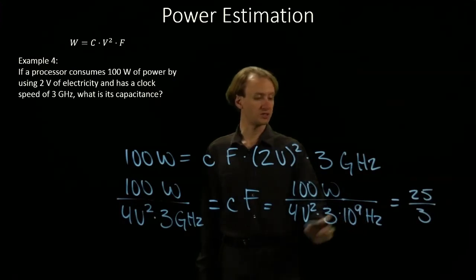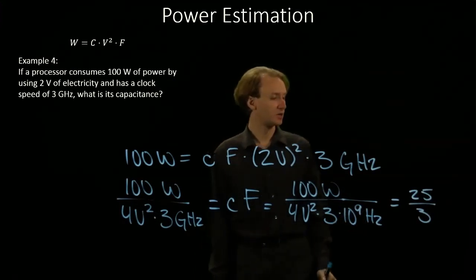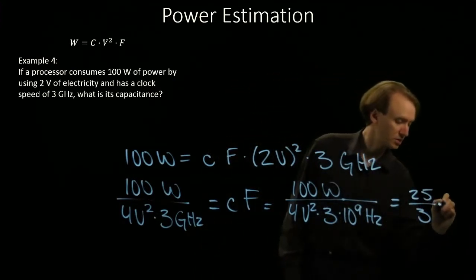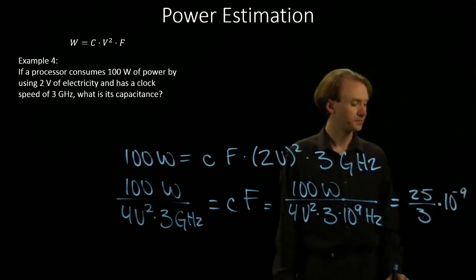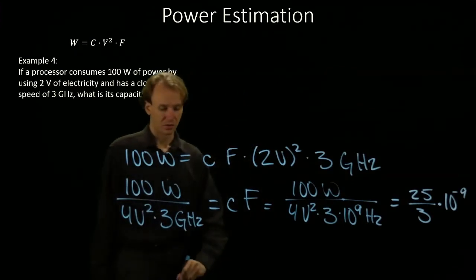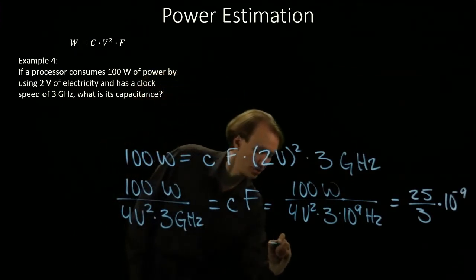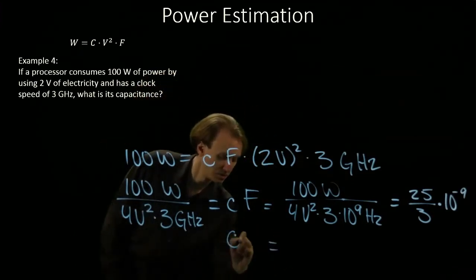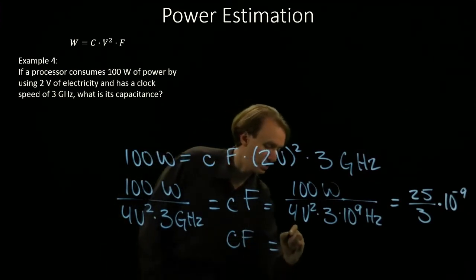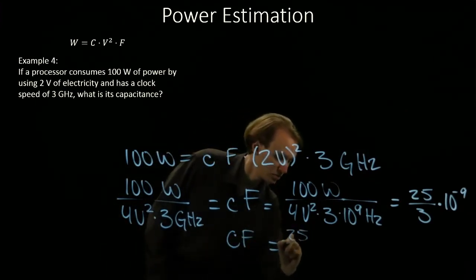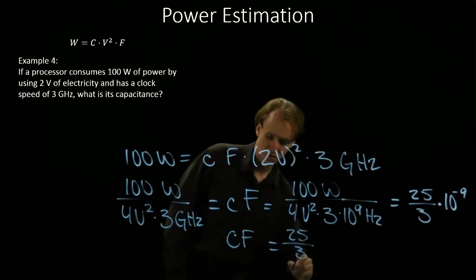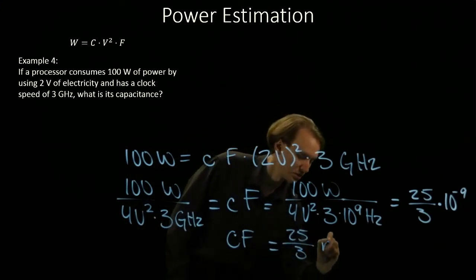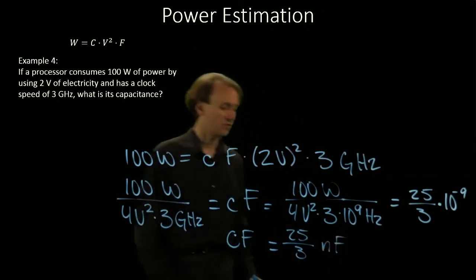Now we have this 10 to the ninth on the bottom. This would become 10 to the minus ninth if we put it on the top. Alternatively, we can write this as 25 thirds times 10 to the ninth on the top. So we can write this as 25 thirds in nanofarads.